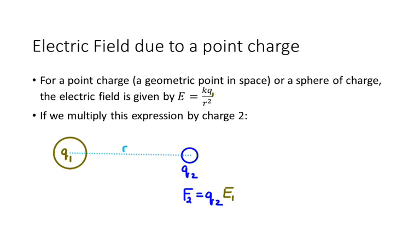So if I multiply Q2 by the expression KQ over R squared, where that Q is now Q1, then I get a relationship that looks like this, just K product of the charges over R squared, which you may recognize from last year as being Coulomb's law.